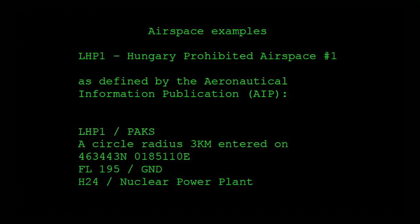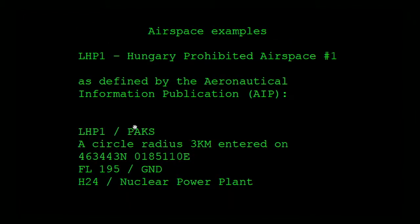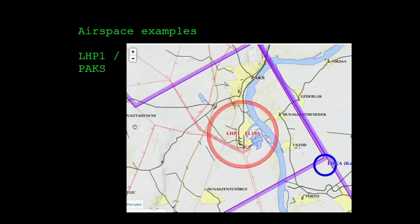Let me show an example of an airspace definition as published by the Hungarian authority — all of them are published in a similar manner. The text for this airspace is a circle radius of three kilometers, centered on a GPS coordinate. This is how it looks in reality — that's Paksch, the big nuclear reactor in the middle of Hungary, and it's a very red area. You should not fly there, period, because they get angry at you.